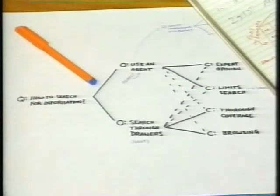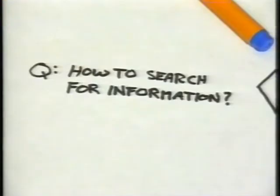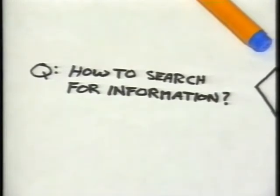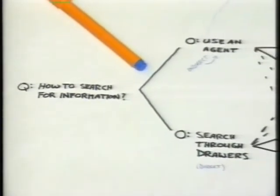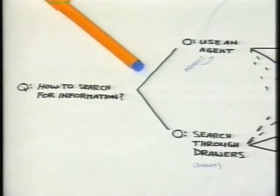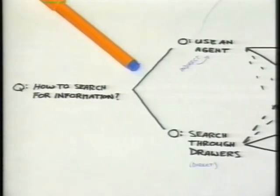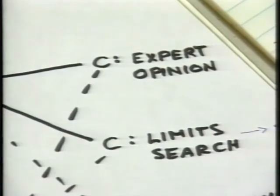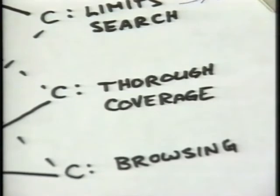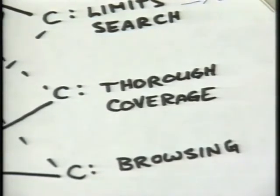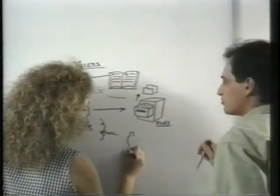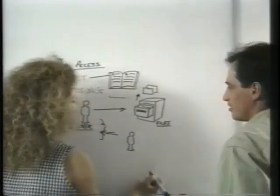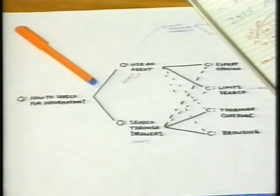For example, this record describes the design considerations surrounding the issue of searching within a hypermedia interface. The issue is represented by this question: how to search for information. Two possible options were suggested: use an agent to look for the information, or have the user search through drawers. The first option is good because it provides an expert opinion and limits the search to a relevant subset. On the other hand, the second option ensures thorough coverage of the material and provides the user with an opportunity for browsing. Even though the development of the design idea was much more chaotic, opportunistic, and creative, QOC enables us to represent the reasoning behind the idea in a more organized manner.